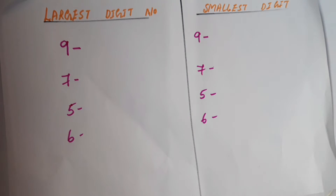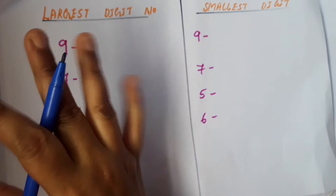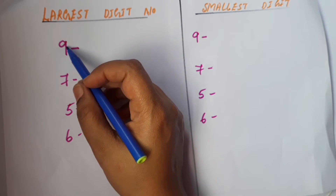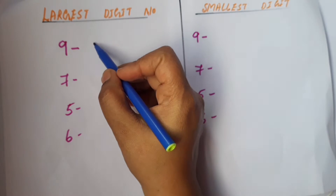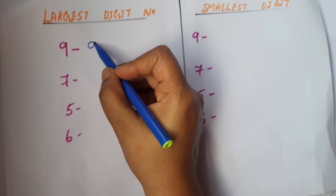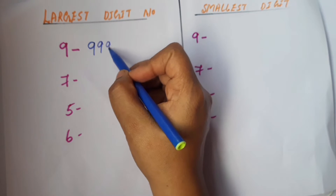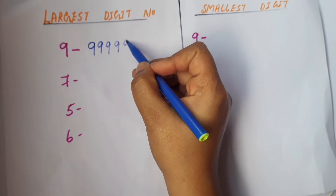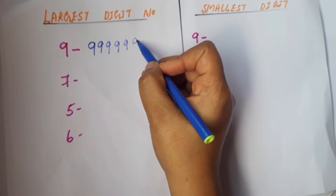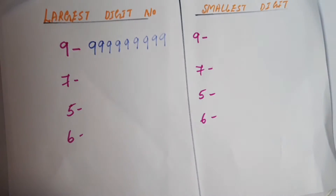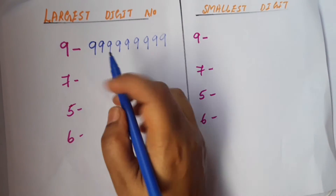To find the largest or greatest number, the trick is we have to write the digit nine, the number of times given. So the largest or greatest nine-digit number means we have to write nine, nine times: one, two, three, four, five, six, seven, eight, nine. So nine times nine.